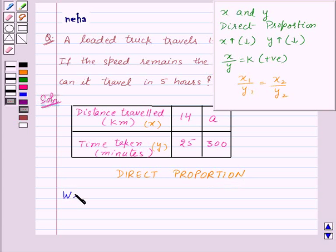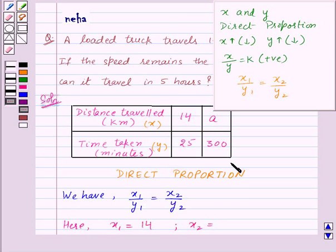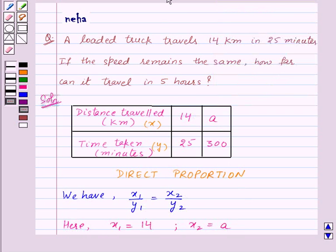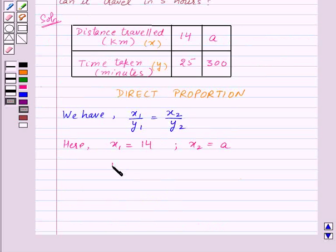So we have the relationship x1 upon y1 is equal to x2 upon y2. Here in this case, x1 is equal to 14 and x2 is equal to a. Also, y1 is equal to 25 and y2 is equal to 300.